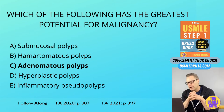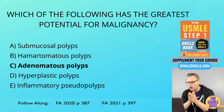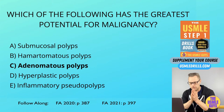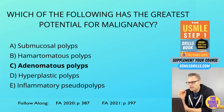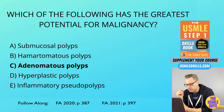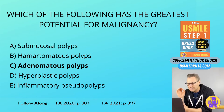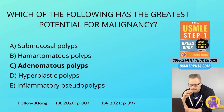Next, let's take a look at the hamartomatous polyp, which is a polyp with distorted architecture that grows out of normal colonic tissue. This is associated with two commonly tested conditions: Peutz-Jeghers syndrome and juvenile polyposis. This is going to present as a solitary lesion. We'll talk about Peutz-Jeghers and juvenile polyposis shortly.